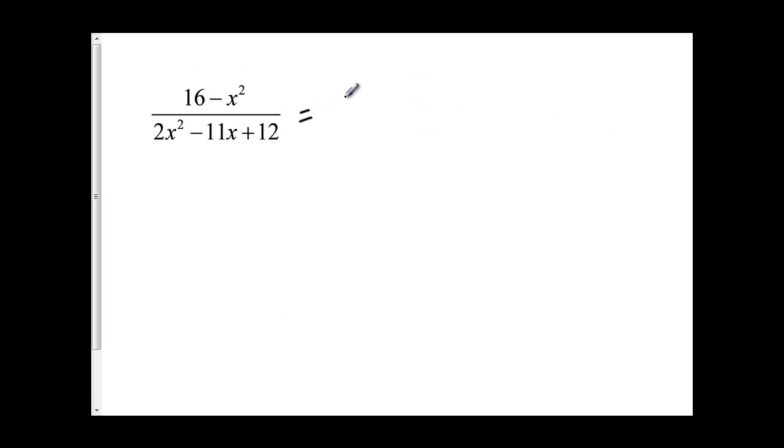One thing that might happen is we might get factors that don't match exactly. On our top here, I've got a difference of squares. So my factors are going to be 4 minus x and 4 plus x.